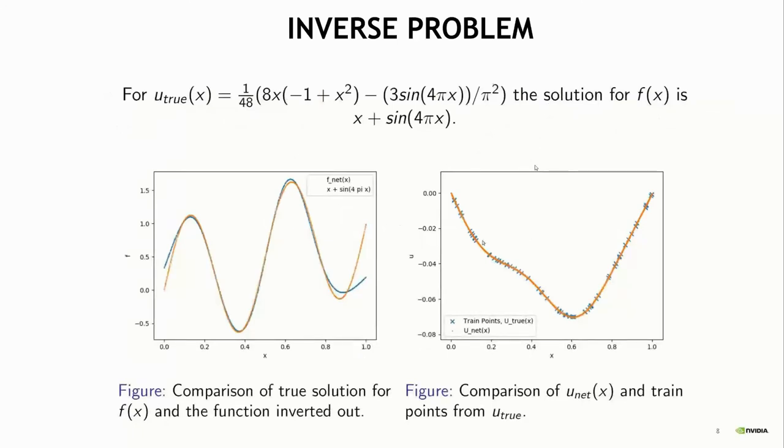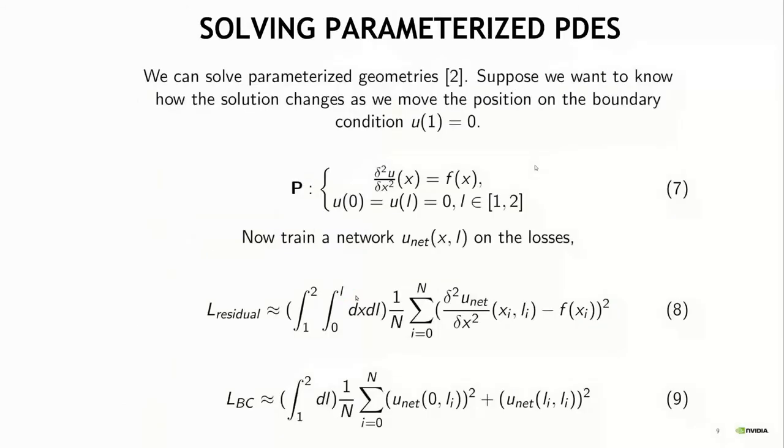If you do this for this 1D example, on the right is the solution U. The blue crosses are the sample points where we know the true solution and the orange line is the neural network solution. And on the left is the forcing function. Orange here is the true solution and blue is the inverted forcing function. You see that in the interior of the domain, we see pretty good match. But close to the boundaries, there's some discrepancy. But then because we're using Dirichlet boundary conditions, the sensitivity of the solution to the forcing function close to the boundaries is lower.